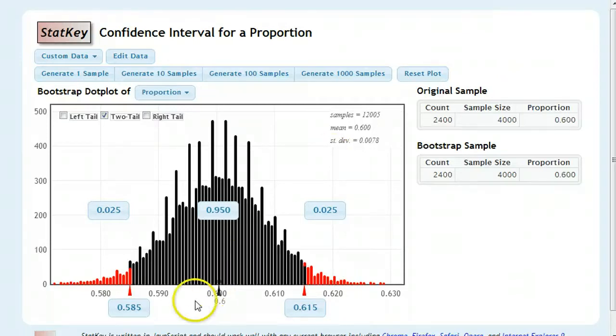And so, the big idea here is whenever you talk to more people, and you're doing it, of course, in a valid way. If it's not an SRS, if it's a convenient sample or voluntary sample, you could have a million people and it would be totally worthless. But if you do a true SRS or something equivalent, the more people you talk to, the smaller that interval is going to get.